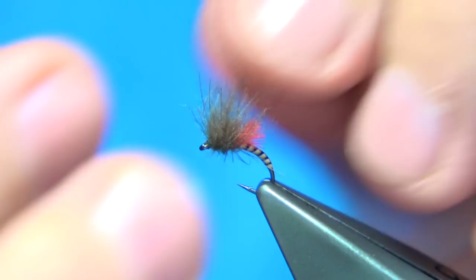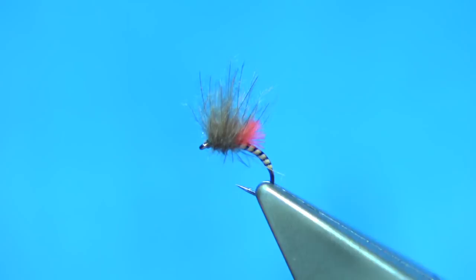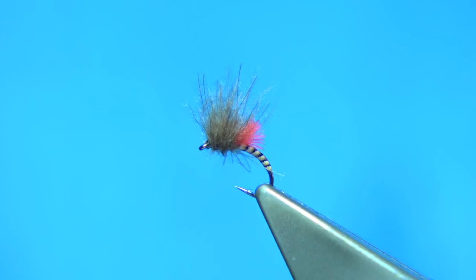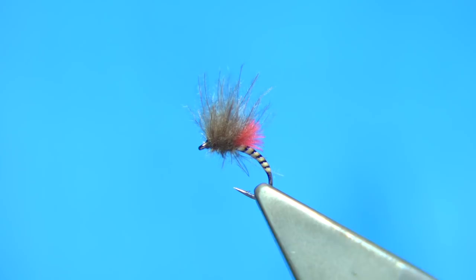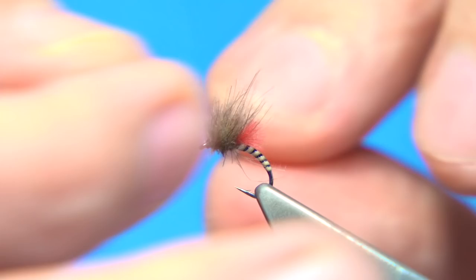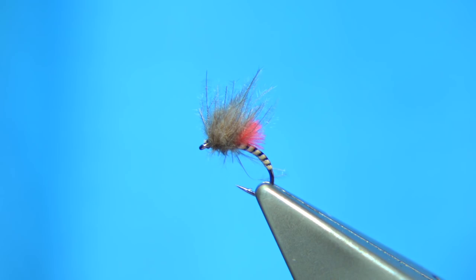You can do the same fly for doing emerger mayfly patterns, but it's a very simple pattern. You see, nothing to it. If you want to add a bit of floatant to the CDC you can, and it'll float all day. But that's really all it is, is an emerging midge with a good print. It gives a good impression on the water and one I'd certainly recommend.